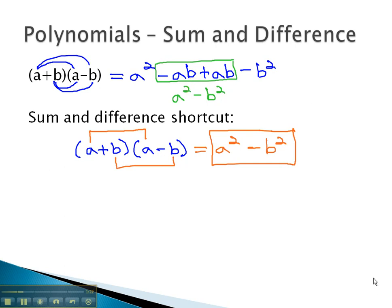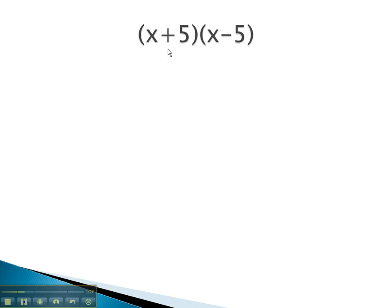Let's take a look at some examples where we can see this worked out. In this problem, notice the factors are identical, except one is a sum and one is a difference. Here we can just multiply the first two together, x times x to get x squared, and the last two together, 5 times negative 5 is negative 25, and we have our product.